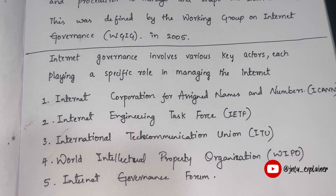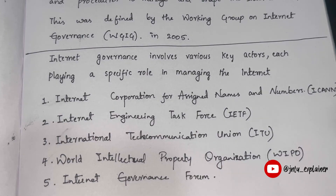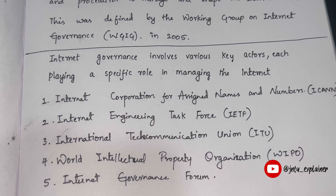The fourth key actor is the World Intellectual Property Organization, or WIPO. This is a United Nations agency that oversees international intellectual property rights, including those related to the internet such as domain name disputes and the protection of online content. WIPO protects creators' content from being stolen — for example, the explanations I make on this channel are my own property, and WIPO protects that.